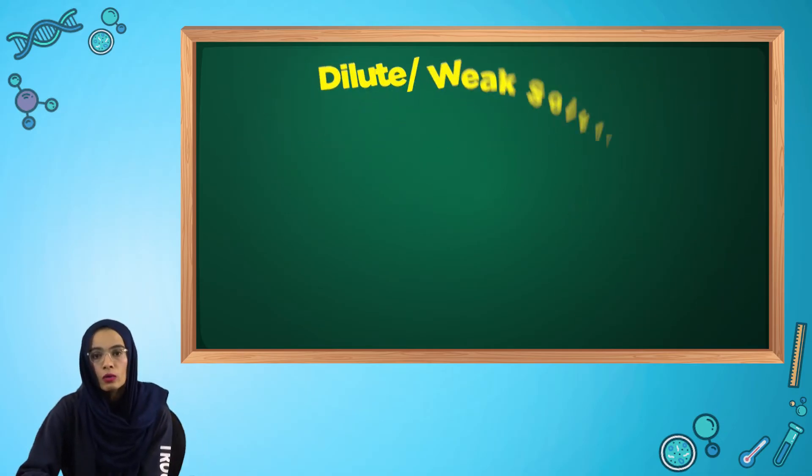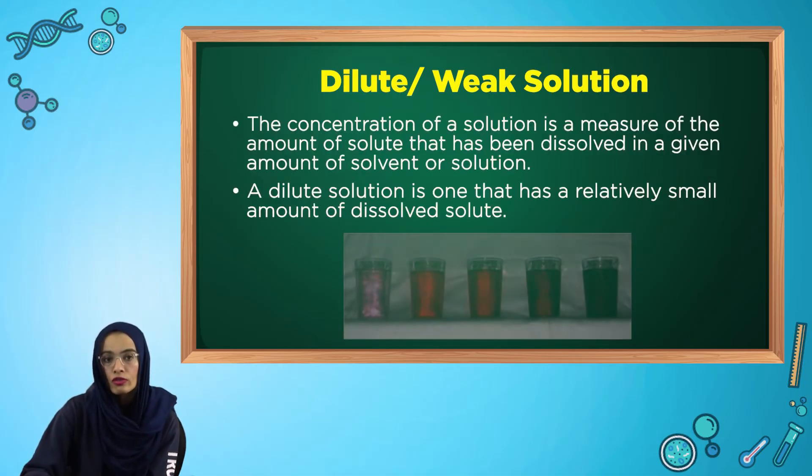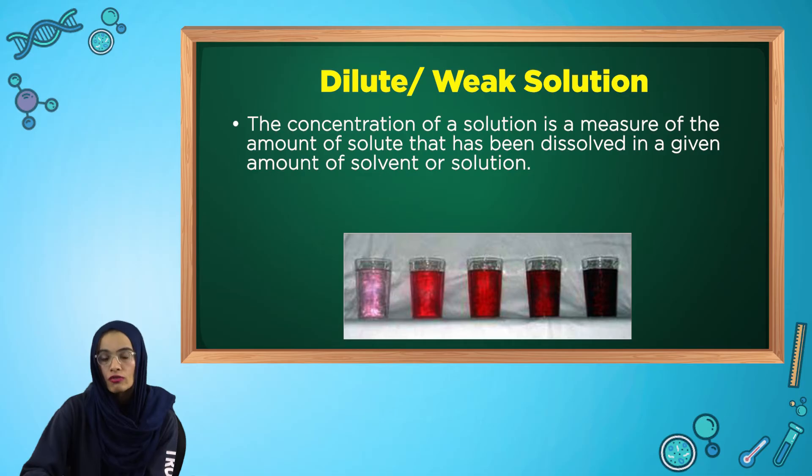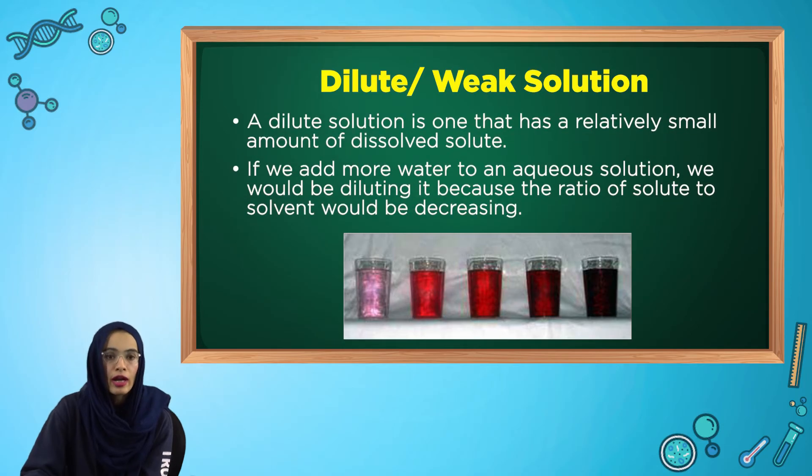Now let's talk about the two different types of solutions. The concentration of a solution is a measure of the amount of solute that has been dissolved in a given amount of solvent or a solution. The dilute solution is the one which has relatively small amount of dissolved solute. If we add more water to an aqueous solution, we would be diluting it because the ratio of solute to solvent would be decreasing.